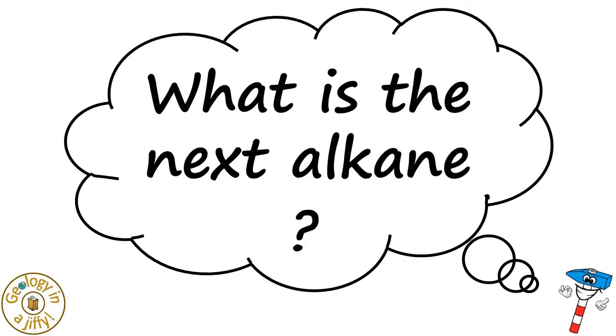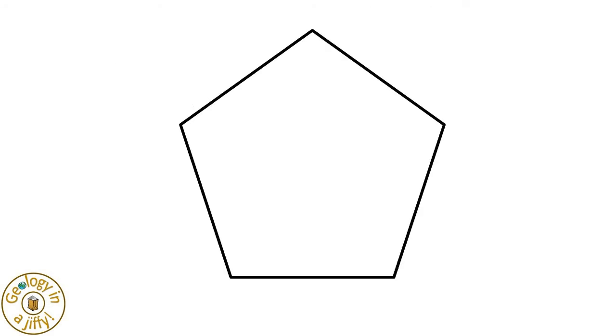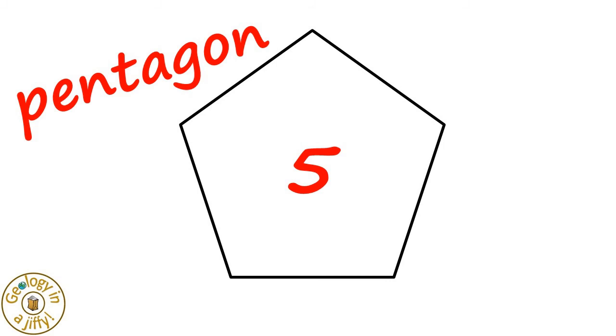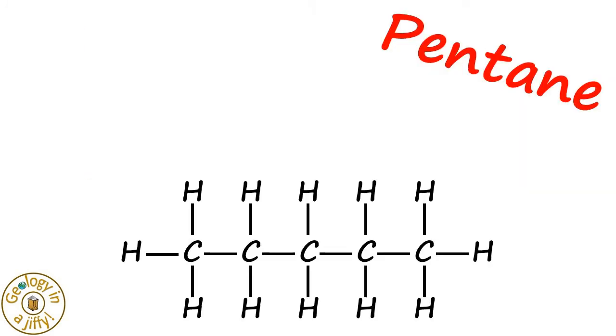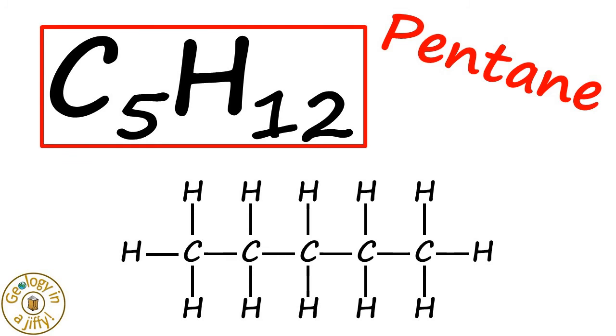What is the next alkane? This shape is a pentagon, and has five sides. Pentane is the next most complex alkane, as shown by these models. Using the formula, we can work out that the formula for pentane is C5H12.